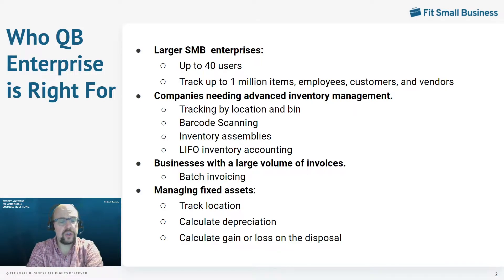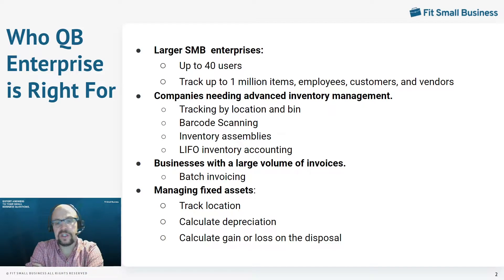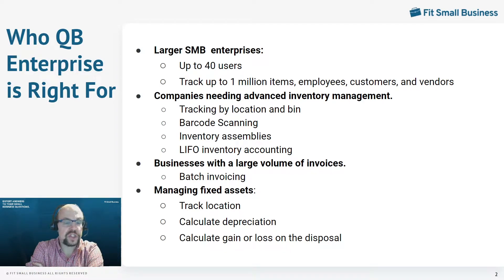In addition to the user limitations, you can track up to 1 million items. Items within QuickBooks include employees, customers, and vendors, and that is a substantial upgrade from the lesser QuickBooks desktop product, which is QuickBooks Premier.